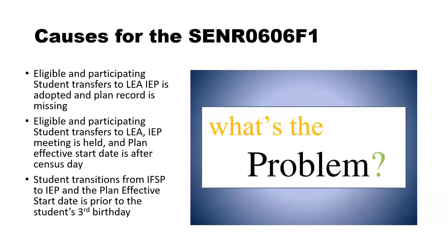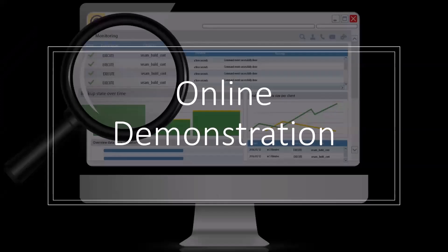The third cause: a student transitions from IFSP to IEP and the plan effective start date is prior to the student's third birthday. That scenario was specifically addressed during special education data office hours by Brandy's team. Now let's look at an online demonstration to identify in CalPADS data some of the scenarios we just discussed and what triggers the SENR 0606F1.